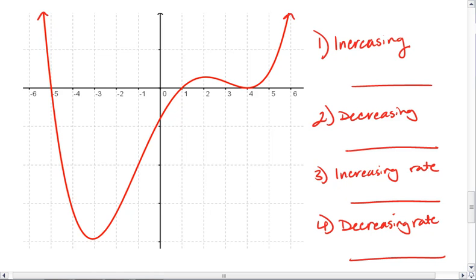The first thing I want to do is mark our max and min points, because those points will separate out my graph to its increasing sections and its decreasing sections. Now I have a global min at x equals negative 3.